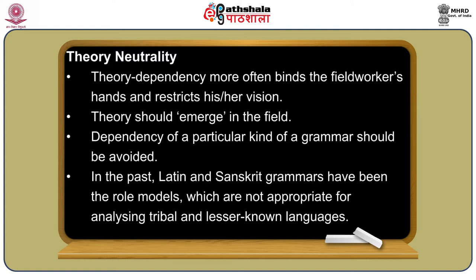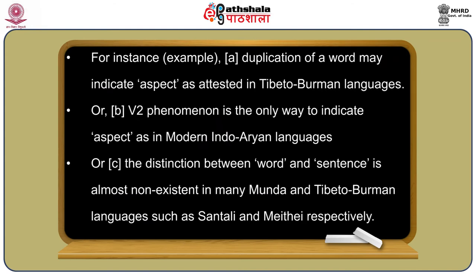In the past, Latin and Sanskrit grammars have been used as the body of reference for writing grammars of any language — whether a Tibeto-Burman language grammar or a Tai-Kadai language grammar — which is not very fruitful. Sanskrit grammars are very appropriate for the languages they describe, and Latin grammars are appropriate for the languages they describe. However, just because those grammars are so well written does not mean that other languages will fit the same bill. For example, duplication of a word may indicate aspect, as attested in Tibeto-Burman languages — which Sanskrit or Latin grammars cannot explain.